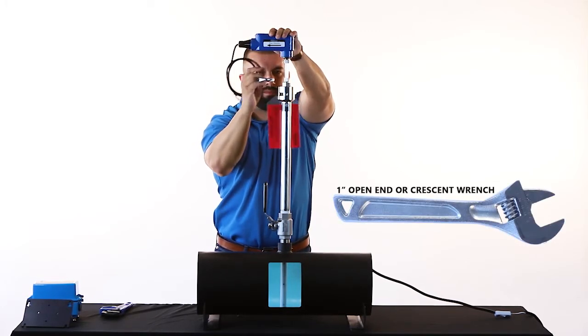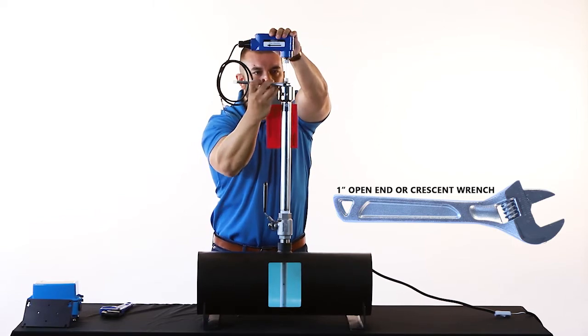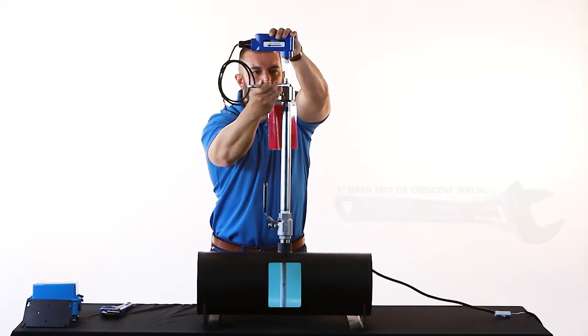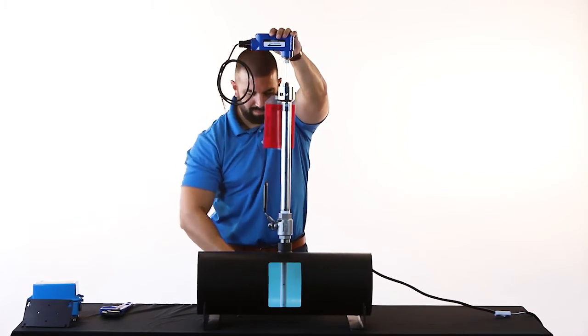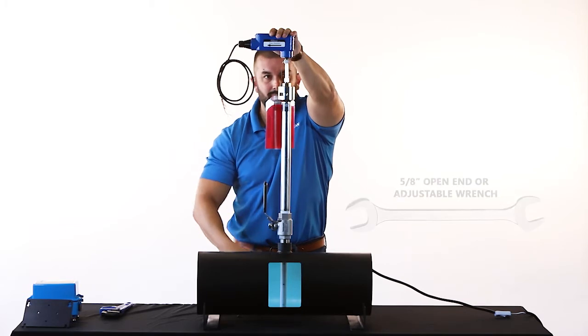Use a 1 inch open end or crescent wrench to tighten the preload fitting until it is flush with the hot tap adapter, approximately 1.25 turns. Use the flow sensor enclosure to maintain the correct orientation while tightening the preload fitting.